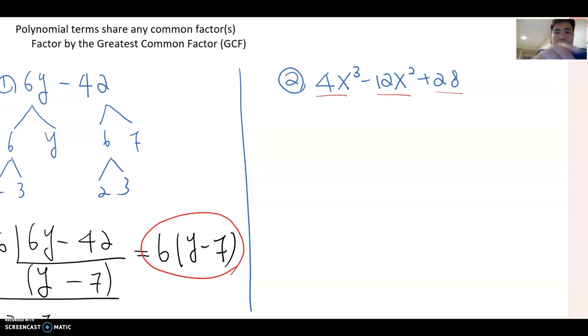So follow me again. 4x³ minus 12x² plus 28. If you find 4 is the common factor, then please just do it. So then this becomes x³ minus 3x² plus 7.